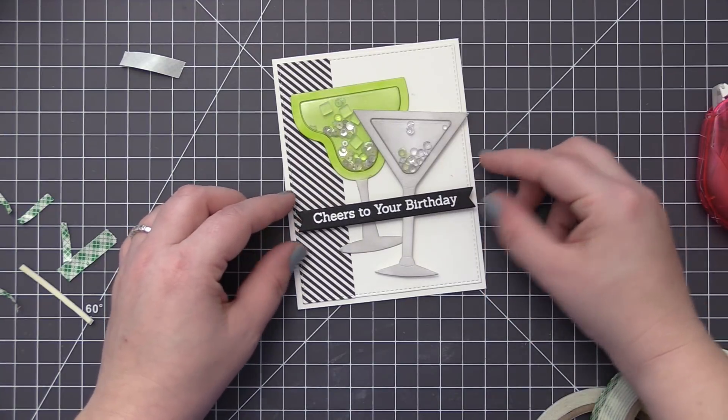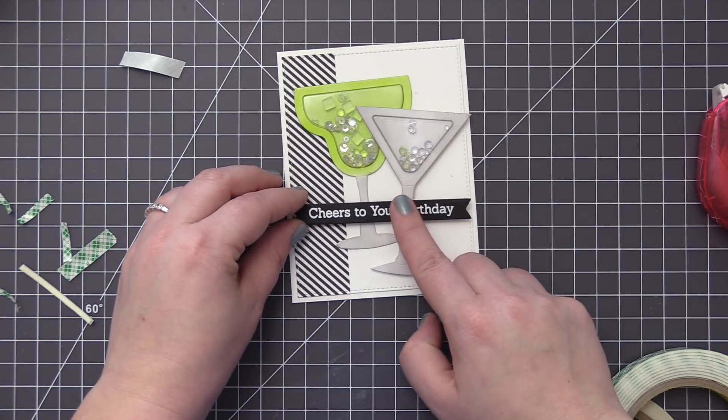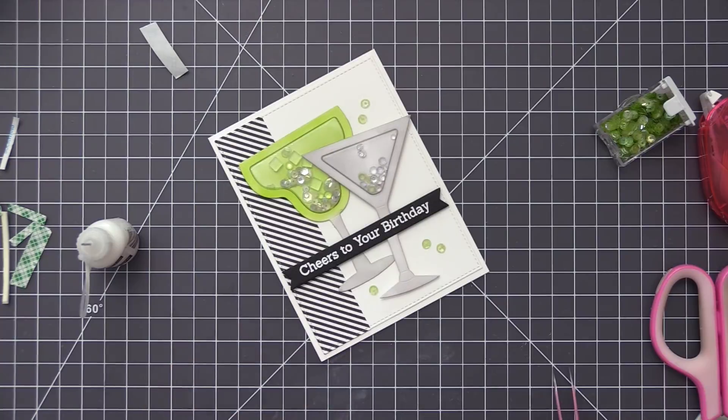And then once I have that in place the last thing I need to do is just add a little bit of embellishment. So the first thing I'm going to do is add some green sequins kind of scattered around. I like the contrast of having that green color on the white card base.